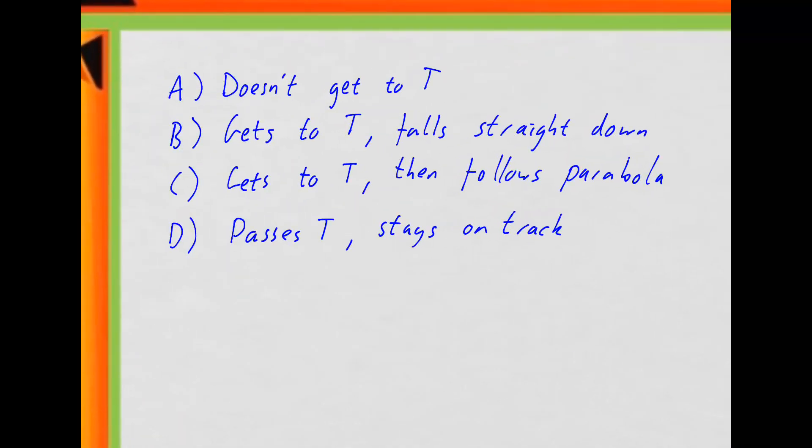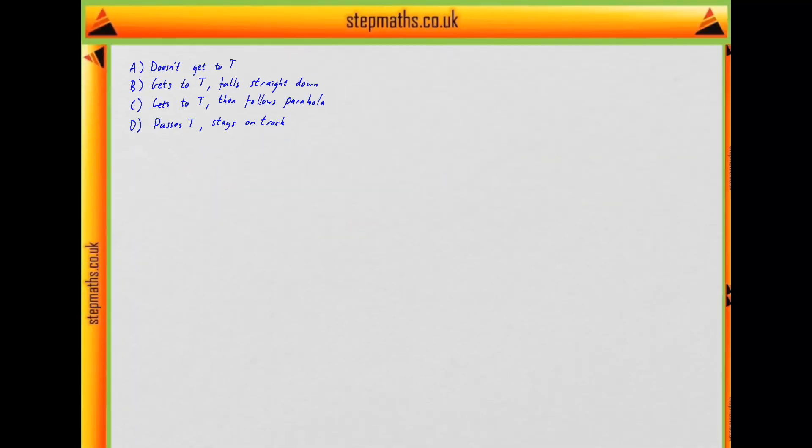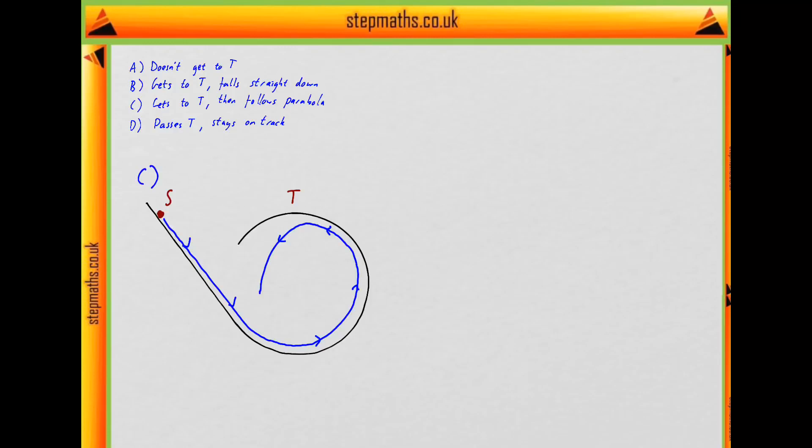OK, so which option should we look at first? I think it's easiest to look at C or D. So let's start with C. And what does that look like? Well, it's something like this that goes around the track, gets to T, follows a parabola to the left. And if we're thinking in terms of energy, there's no friction, there's no energy loss to friction. So if we think about the initial gravitational potential energy and initial kinetic energy, the sum of those is conserved.